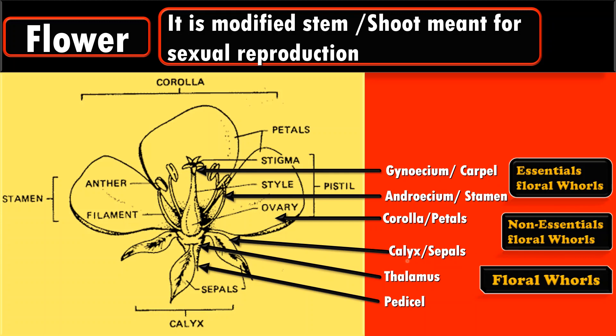Calyx is the first and outermost whorl; its members are called sepals. It is green, photosynthetic, and protects the inner whorl during bud condition. The second whorl is corolla; its members are called petals. These petals are colored in nature, so they attract pollinators such as birds and insects for pollination. Corolla also protects the inner part of the flower during bud condition.